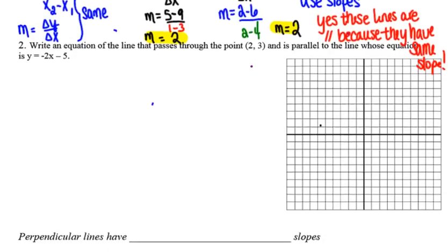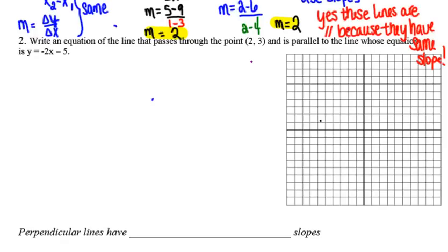Number 2 says write an equation of the line that passes through the point whose coordinates are (2, 3) and that is parallel to the line whose equation is y equals negative 2x subtract 5. Because these lines are parallel, I know they're going to have to have the same slope.